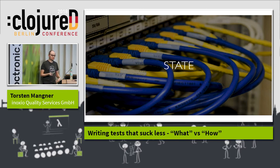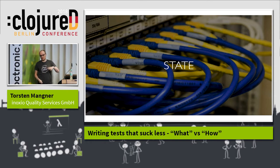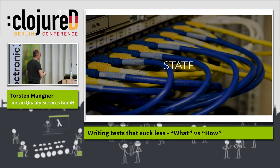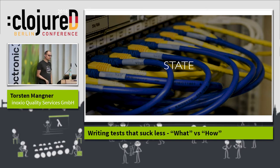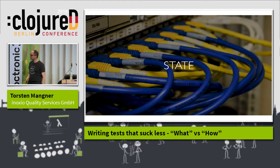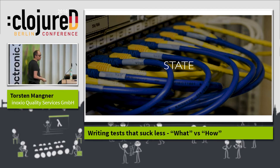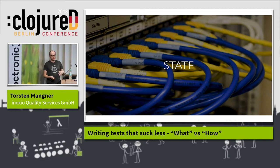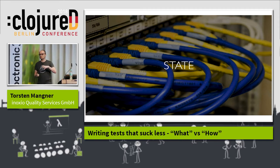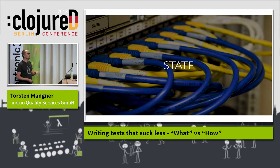Those tests have to cope with state. They tend to have state not only in one place but everywhere — on the file system, in a database, in a third-party service, on the network, or involving time itself. But as reasonable good Clojurians, we are able to manage that complexity. We mock some things, prepare a database, stuff like that. And we somehow get our integration test to work. It's green, it's stable, and it's fine.